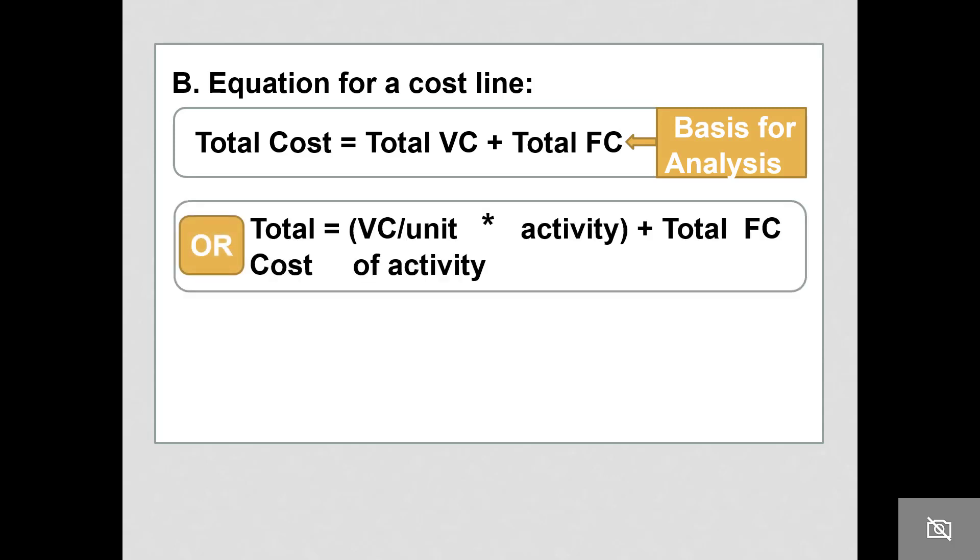If you take that equation and break it down further, total cost will equal variable cost per unit of activity times activity plus total fixed cost. Note that total variable costs are dependent on activity.